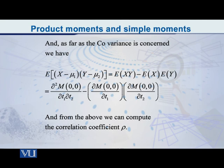So just a while ago I told you that E of xy is quite important. And the reason is that it is a part of the formula of the covariance. So, the mathematical formula that you get in terms of the derivatives of the MGF, if you want to find the covariance.